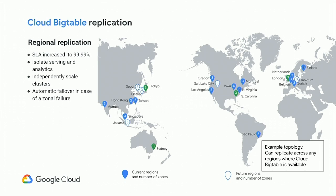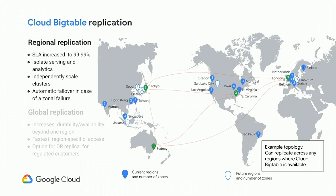It used to be a zonal service, and now you could have two zones — two clusters running in separate zones in a single region. This gave you a few benefits: an extra nine on your SLA by expanding your failure domains; it allowed users to isolate served analytics workloads. Spotify does this, where you can have one cluster serving low latency traffic to your customers and another cluster you're pounding with a MapReduce or Dataflow job. You can have isolation so they're not interfering with each other, and you can independently scale the clusters. It also provides automatic failover if you're using the application profile that supports this.